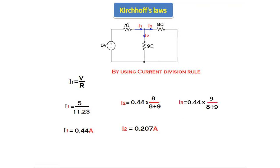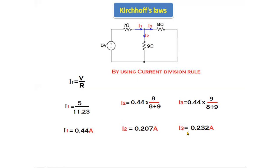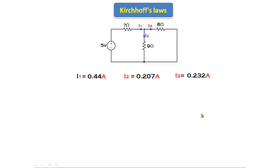For I3, the current through the 8-ohm resistor: total current × opposite resistance / sum of the resistors = 0.44 × 9 / (8 + 9), which gives I3 = 0.232 amperes. So I1 = 0.44 A by Ohm's law, I2 = 0.207 A and I3 = 0.232 A by current division.